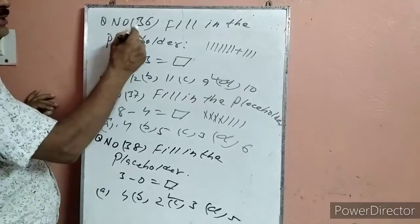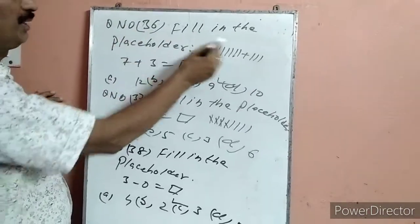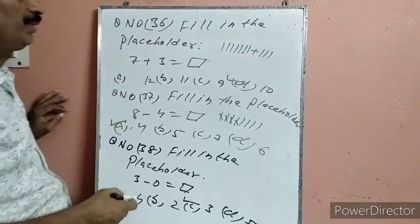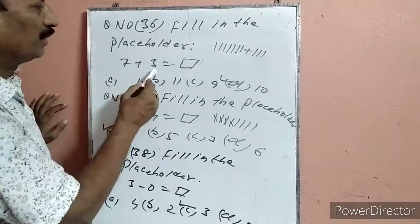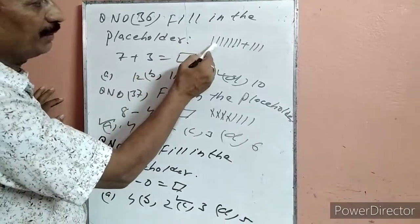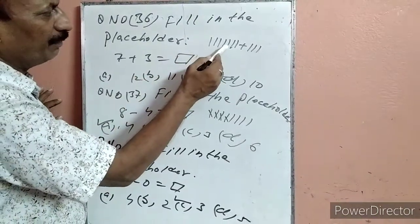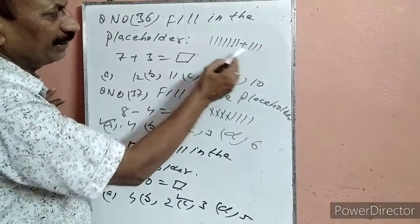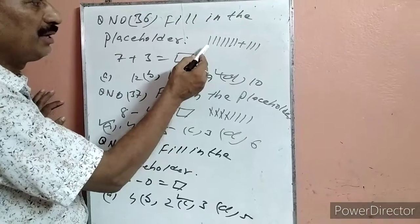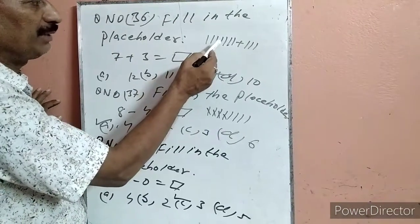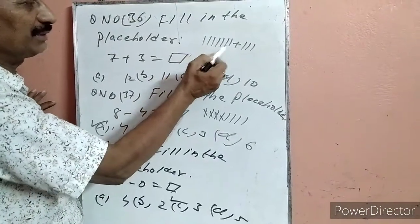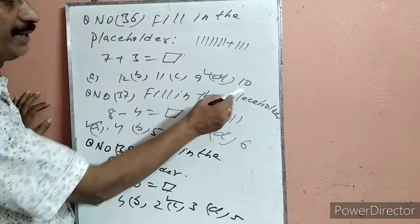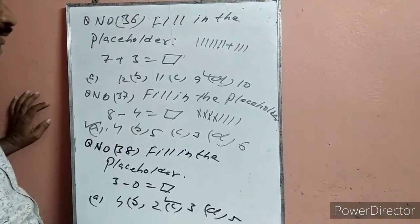Question 36: Fill in the placeholder — 7 plus 3. 7 line drop करेंगे, 3 line drop करेंगे. सबको एक साथ count करेंगे: 1, 2, 3, 4, 5, 6, 7, 8, 9, 10. 10 कहां पर है — D पर. D पर टिक लगा दिए.